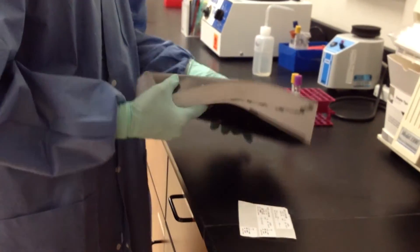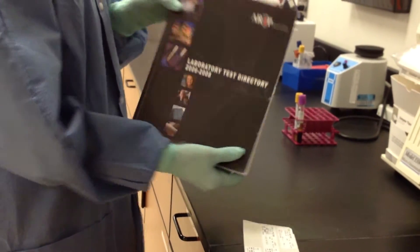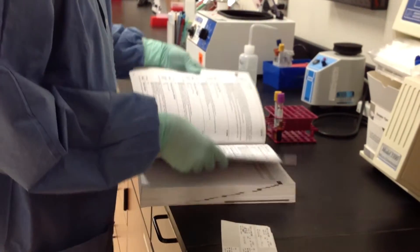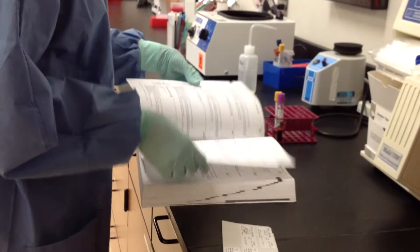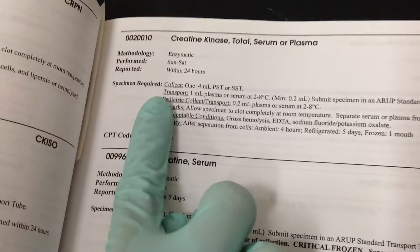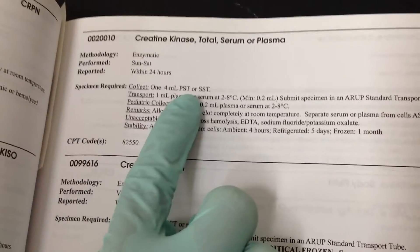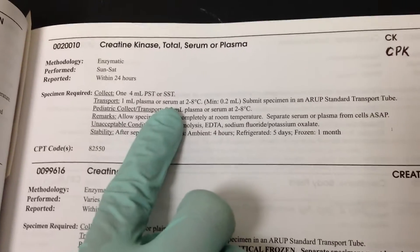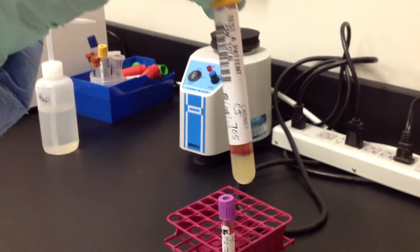We're looking at the CPK total in the test directory. We're going to find our test. We're going to look under specimen required. We need a plasma separator tube or an SST, which is a serum separator tube, so we're going to use our gold tube.